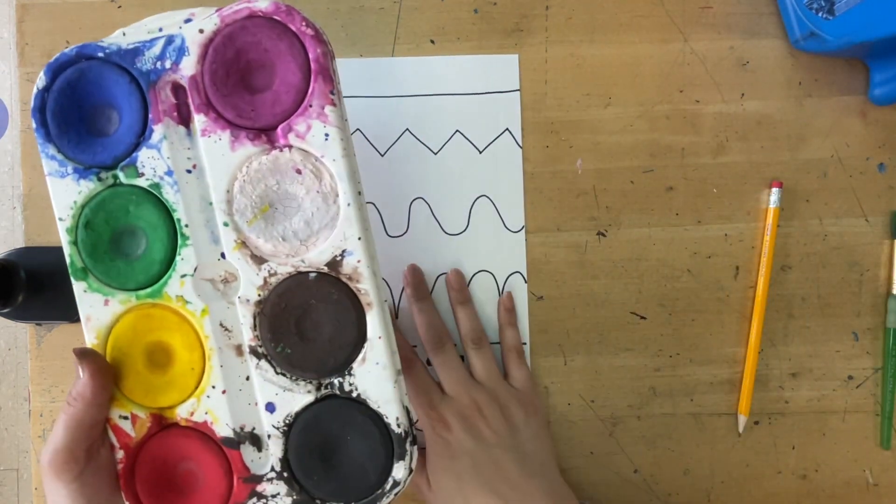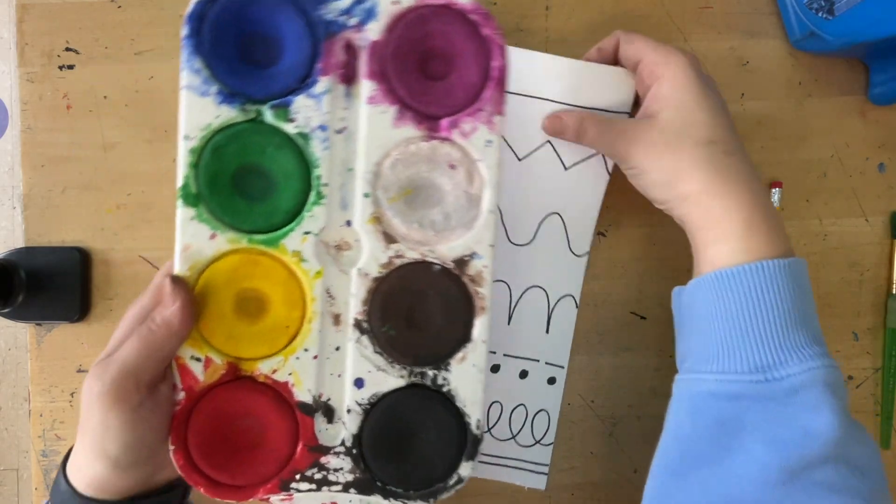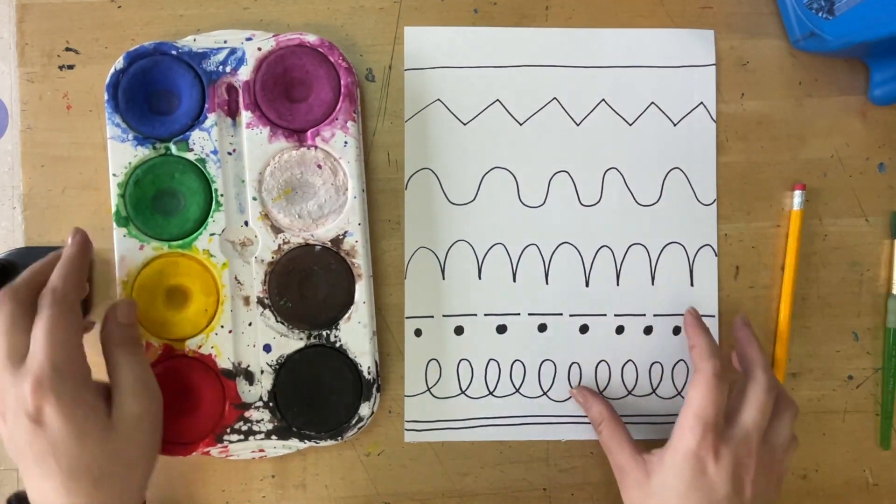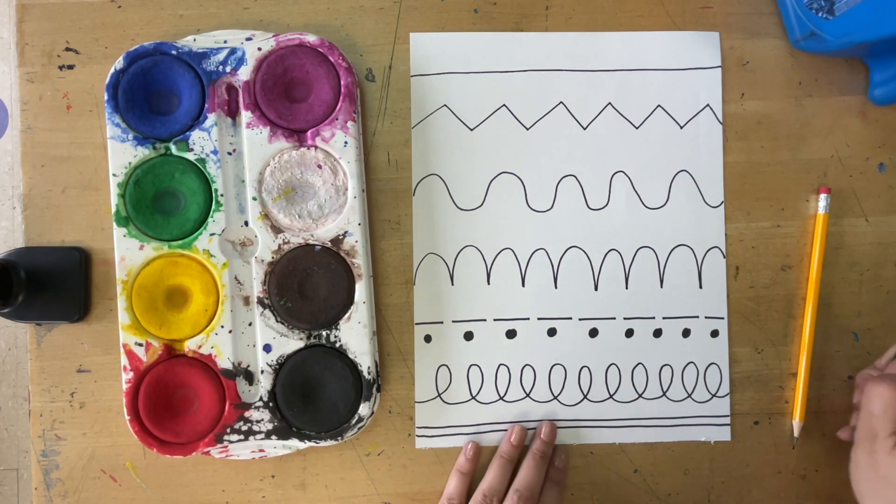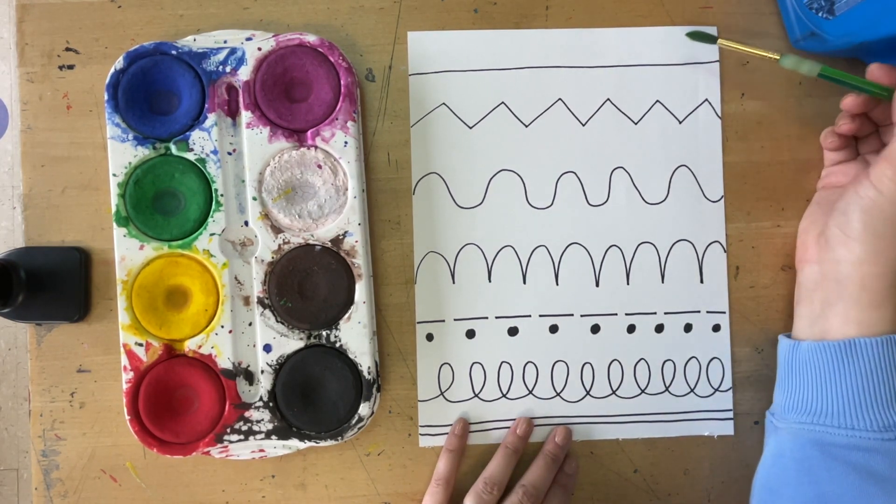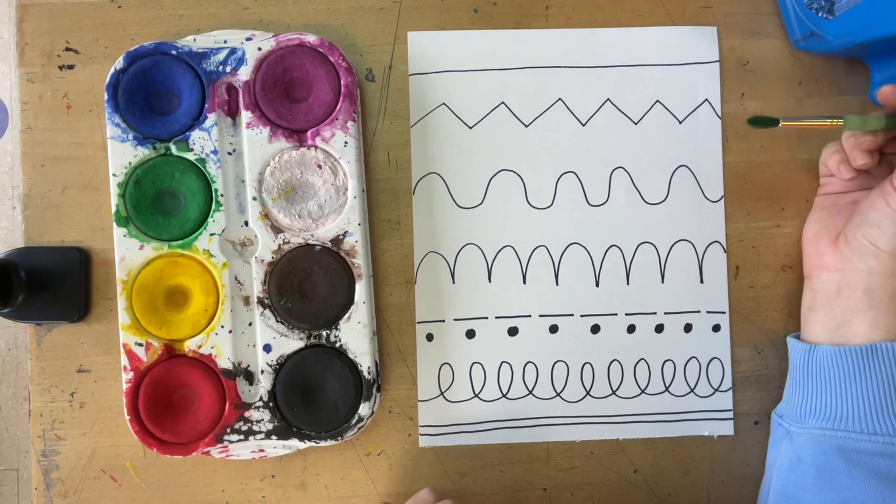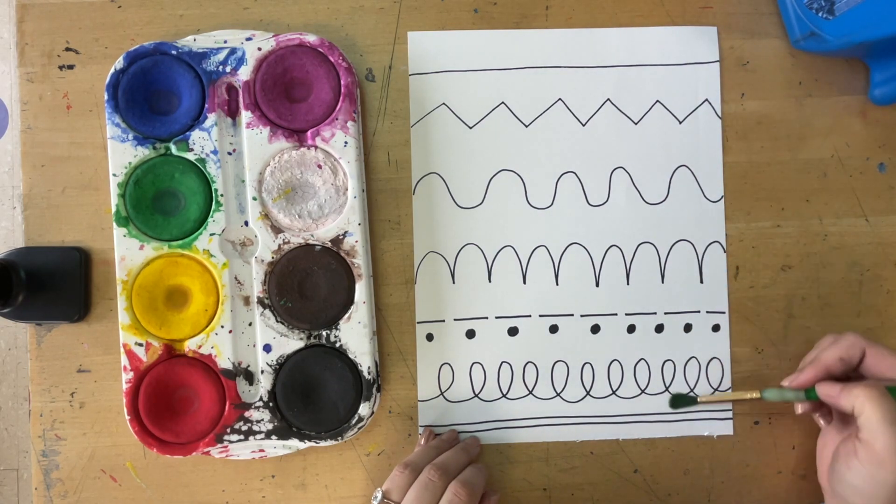For this paint project we're going to be using our tempera cakes, which are these paints. To get these to work you have to get them wet, you've got to wake them up with the water. What I would like you to do is paint the colors of the rainbow, so ROYGBIV all the way down. My first section will be red, orange, yellow.